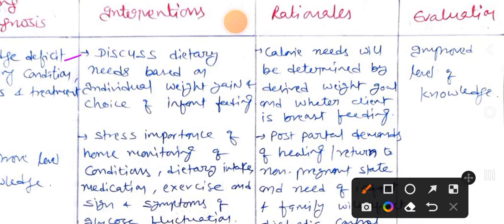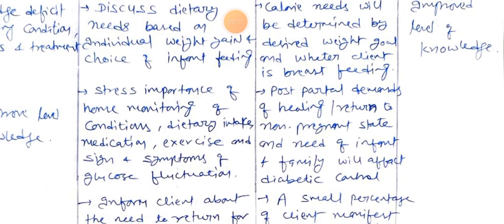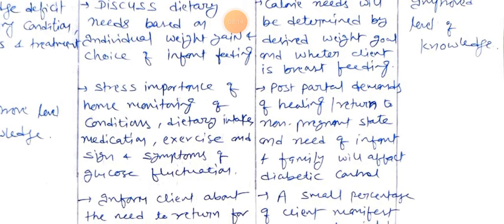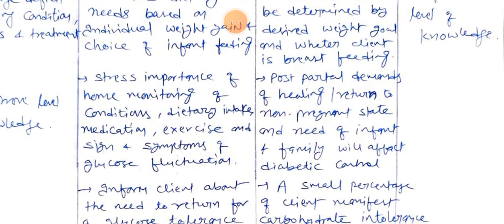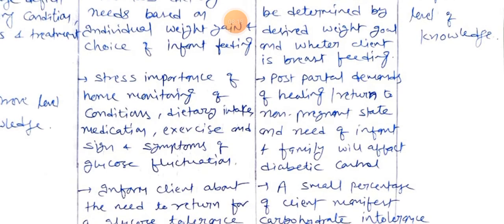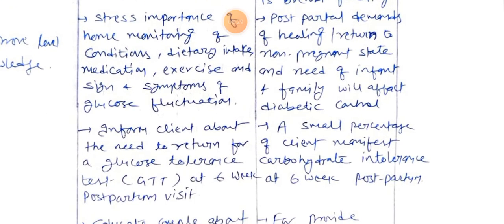Interventions and rationale for diagnosis three: First, discuss dietary needs based on individual weight gain and choice of infant feeding — rationale: caloric intake will be determined by desired weight goal and whether the client is breastfeeding. Stress importance of home monitoring of condition, dietary intake, medication, exercise, and signs and symptoms of glucose fluctuations — rationale: postpartum demands of healing, return to non-pregnant state, and needs of infant and family will affect diabetic control.